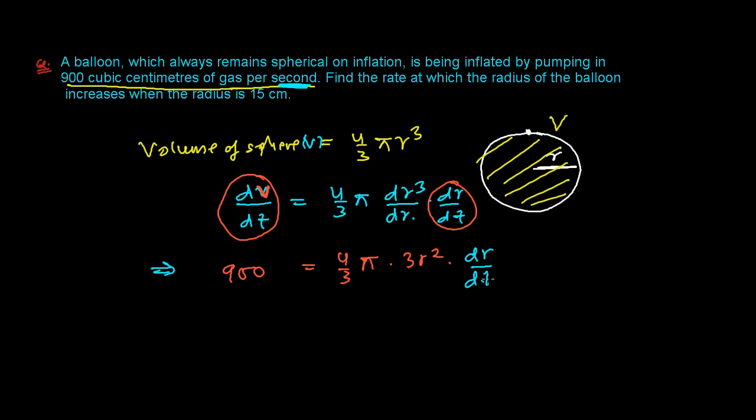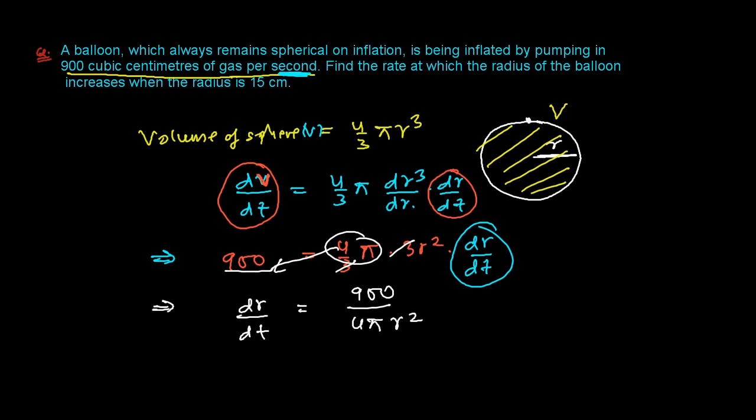So dr over dt, and this is what we need to find out. So now in the next step we can cancel this 3 and this 3. So dr over dt is going to be 900 divided by 4 pi and this r square will come down as well. So we get the rate of increase or decrease of this radius. If it is positive that is increasing and if it is negative it means decreasing. And definitely it is increasing because we are filling up the gas. So we need to find out now dr over dt when radius is 15 centimeter.